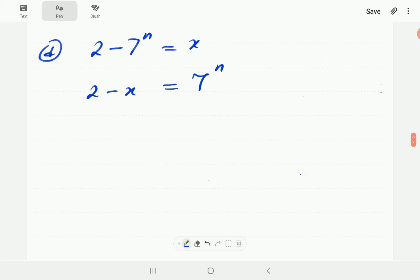Now we can write this in logarithmic form. So we're going to have log, the base is 7, the power is n, so 2 minus x slots in there.